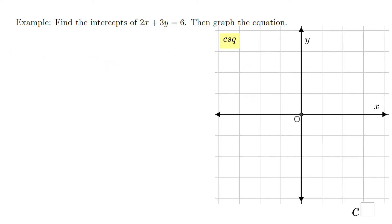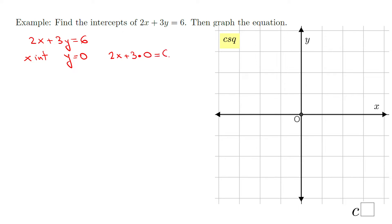Let's take a look at an example: find the intercepts of 2x + 3y = 6. I'm going to start with the x-intercept. The x-intercept means y is zero. So the original equation becomes 2x + 3(0) = 6. Three times zero is zero, so we have 2x = 6.